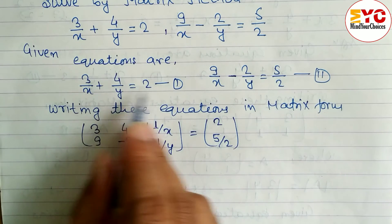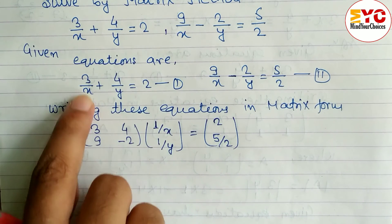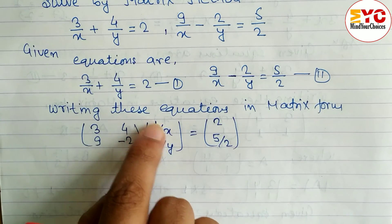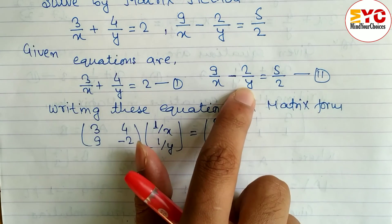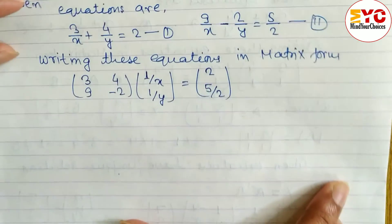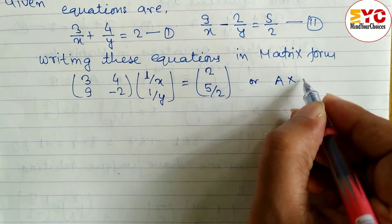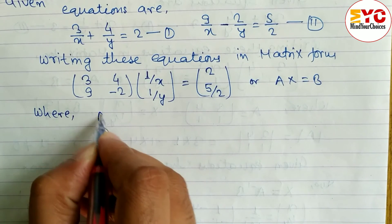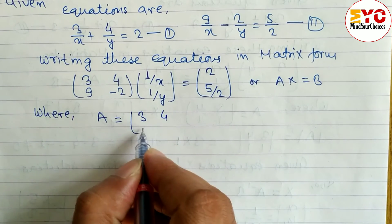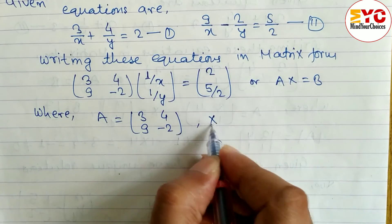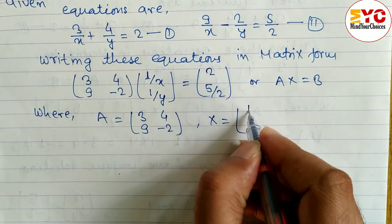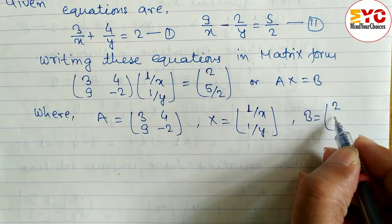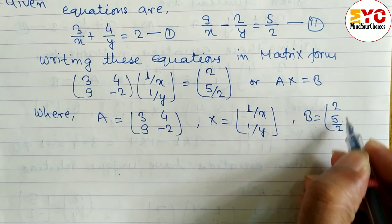When you multiply these two matrices you recover the original equations: 3 times 1/x gives 3/x, 4 times 1/y gives 4/y, 9 times 1/x gives 9/x, and minus 2 times 1/y gives minus 2/y. So this is in the form AX = B, where A is [3, 4; 9, -2], X is the column [1/x; 1/y], and B is the column [2; 5/2].